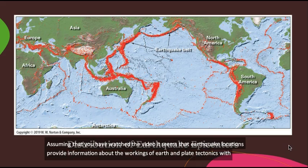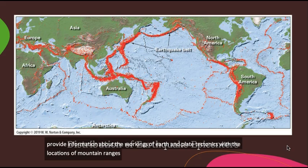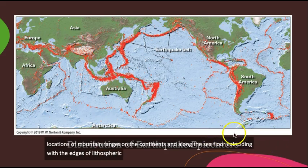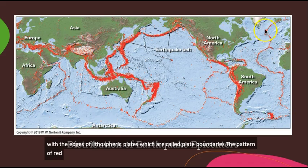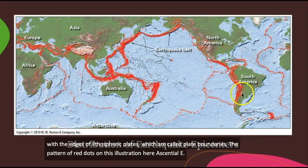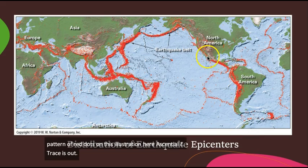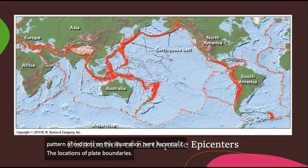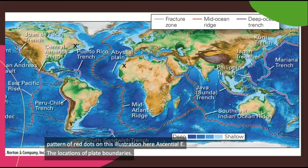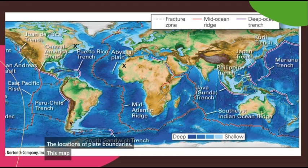With the locations of mountain ranges, both on the continents and along the seafloor, coinciding with the edges of lithospheric plates, which are called plate boundaries. The pattern of red dots on this illustration here essentially traces out the locations of plate boundaries. This map here shows the locations of these plate boundaries perhaps more clearly.